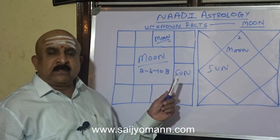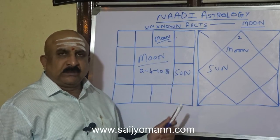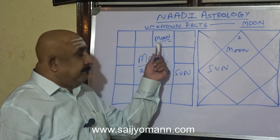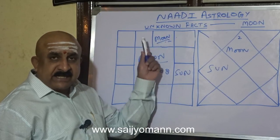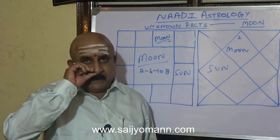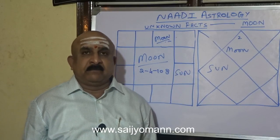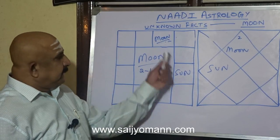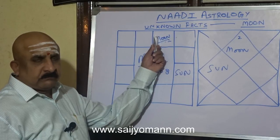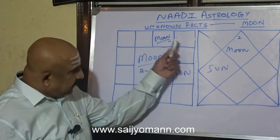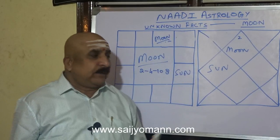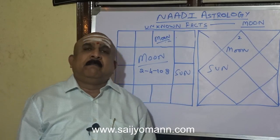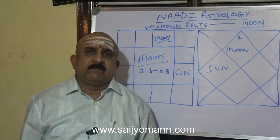One more point about Saturn in the 4th house from Moon: if Saturn is placed in the 4th house from Moon, the native's mother's mother — the native's grandmother — will be a strong lady, a ruling type of lady. The same thing goes with Sun in the 4th house from Moon. The 4th house from Moon is the mother's mother. When Sun is there, the grandmother of the native was a boss of the family, she was ruling the family.